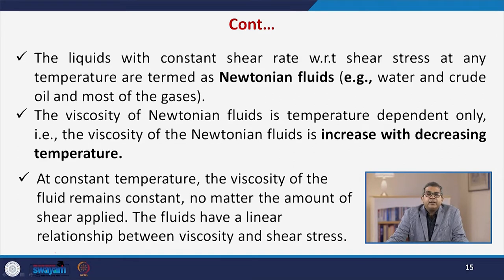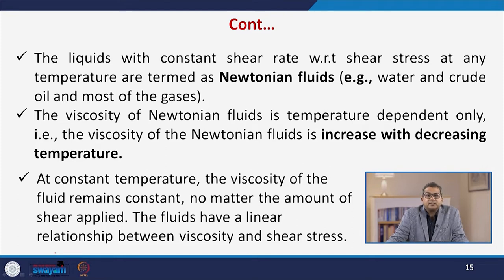Liquids with a constant shear rate with respect to shear stress at any temperature are termed Newtonian fluids — like water, crude oil, and most gases. The viscosity of a Newtonian fluid is temperature dependent only; viscosity increases with decreasing temperature. At constant temperature, the viscosity of the fluid remains constant regardless of the amount of shear applied, and the fluids have a linear relationship between viscosity and shear stress.